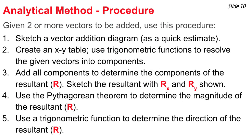This example illustrates the five-step method used in the analytical method to determine the resultant of two or more non-perpendicular vectors. Step one: sketch the vector addition diagram as a quick estimate of the approximate direction of each vector and the resultant. Step two: create your x-y table and use trig functions to determine the components, placing them with appropriate plus or minus signs. Step three: add all components to determine the resultant's rx and ry values. Step four: sketch the triangle formed by rx and ry. Step five: use the Pythagorean theorem for the resultant's magnitude and the tangent function for its direction.